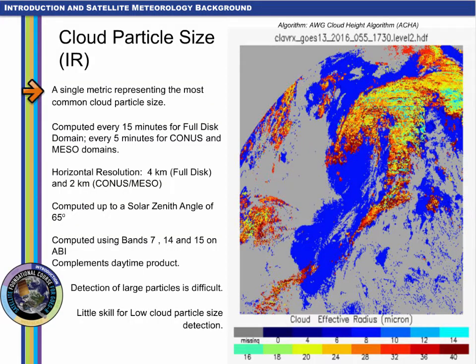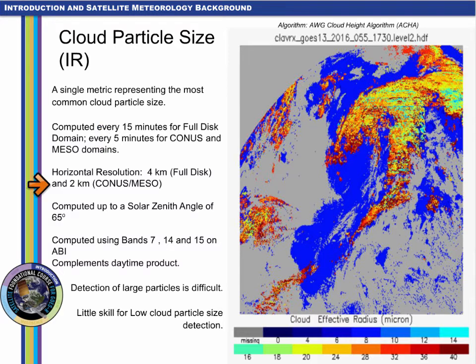There is also a cloud particle size product computed at night using infrared imagery. Like the daytime product, values are computed over the full disk domain every 15 minutes at 4-kilometer resolution, and over CONUS and meso domains every 5 minutes at 2-kilometer resolution. The product uses the shortwave infrared channel band 7 at 3.9 microns, the window channel band 14 at 11.2 microns, and the dirty window channel band 15 at 12.3 microns. This product has difficulty detecting large particles and low clouds, but it should be used as a complement to the daytime product.